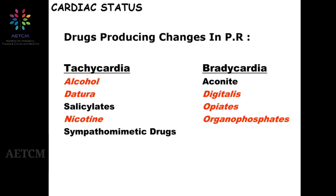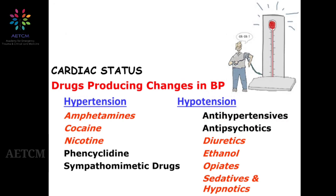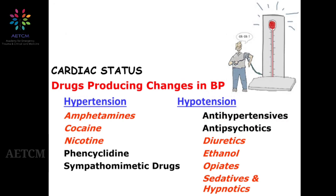Drugs affecting blood pressure: hypertension is commonly caused by cocaine, nicotine, and amphetamines. Hypotension can be caused by diuretics, ethanol, opiates, sedatives, and hypnotics, as well as overdose of antihypertensives and antipsychotics.